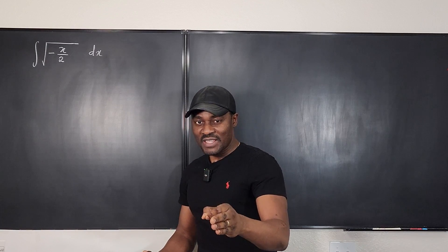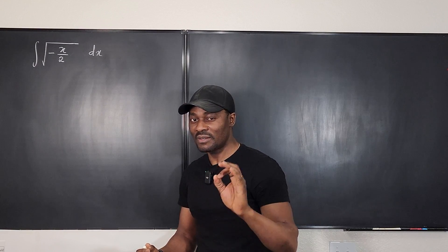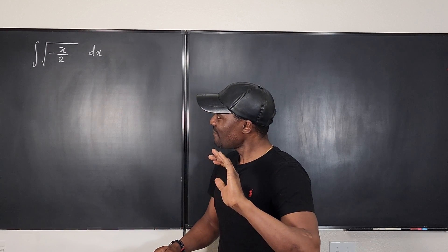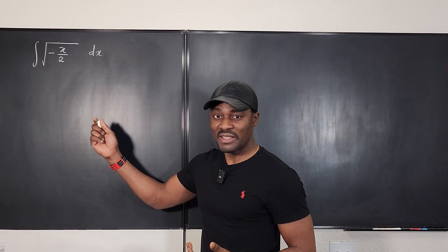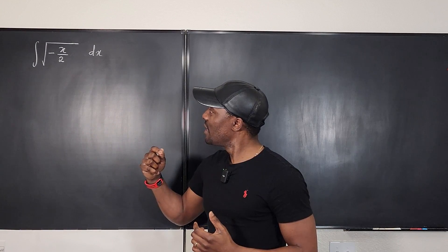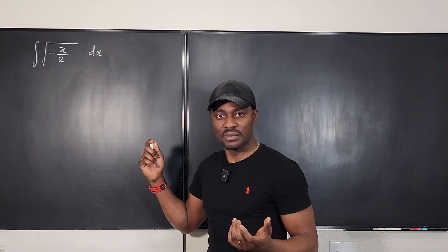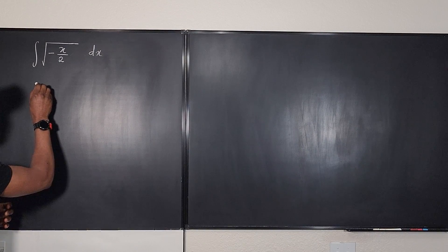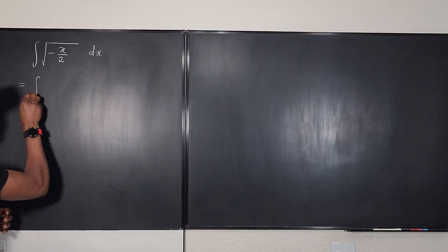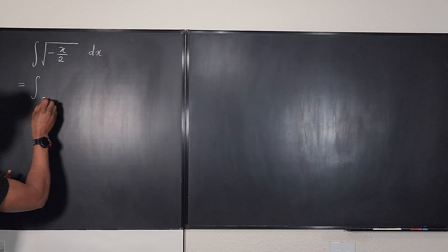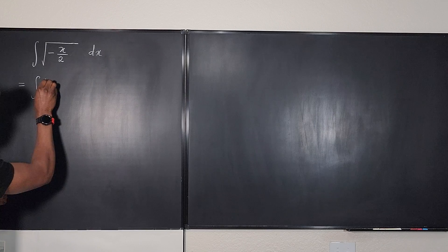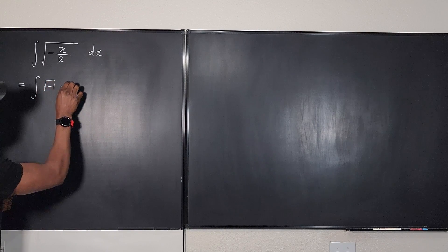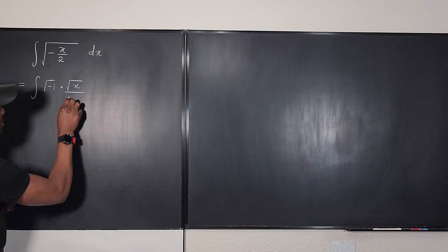There is a way you can escape this by doing something called u-substitution. But what if I try to rewrite this expression, or what if I just treat it as a complex number? Let's look at this. We can rewrite the expression as the square root of negative one multiplied by the square root of x divided by the square root of two.